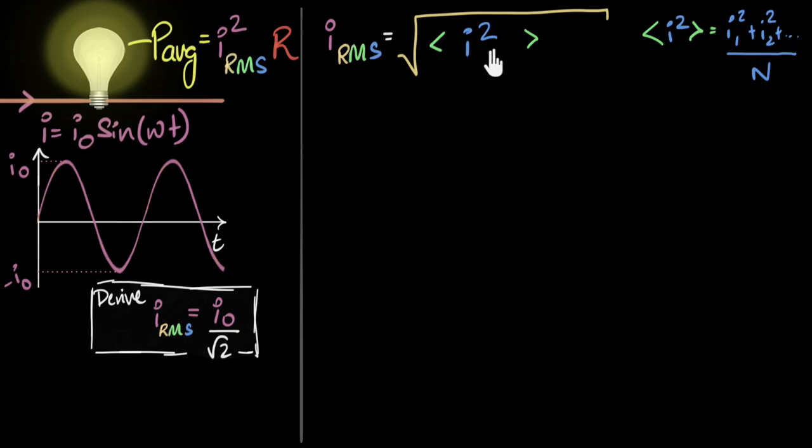Mean of what? Of squares of the currents. So I'm gonna write it this way: I squared, where I is given over here. It's a sinusoid. So let's do it step-wise. Let's first do the first step. Square my current. If I square that, I get I₀² times sin² ωt. First step done.